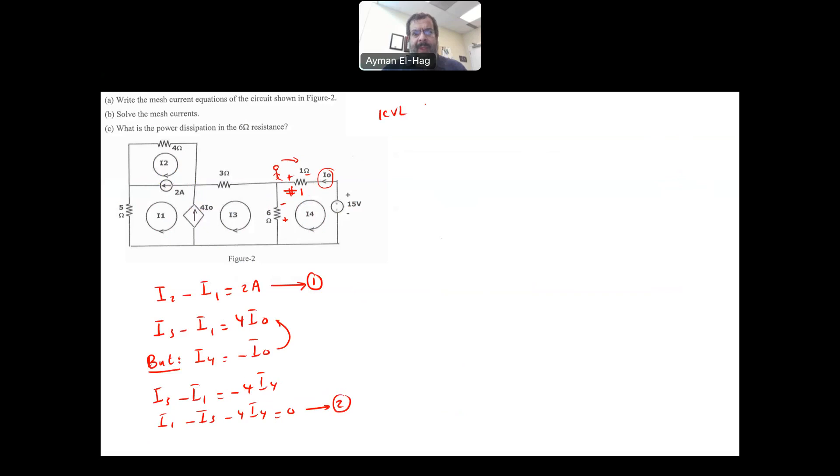So KVL to loop number 1. We will have 1 times I4 plus 15 plus, now for the 6 ohm, I4 going in that direction but I3 in the opposite direction, so it becomes 6(I4 minus I3), and this is equal to zero. Let me arrange terms: 7I4 plus 15 minus 6I3 equal to zero. Move this to the other side: 6I3 minus 7I4 equal to 15, and this is my third equation.